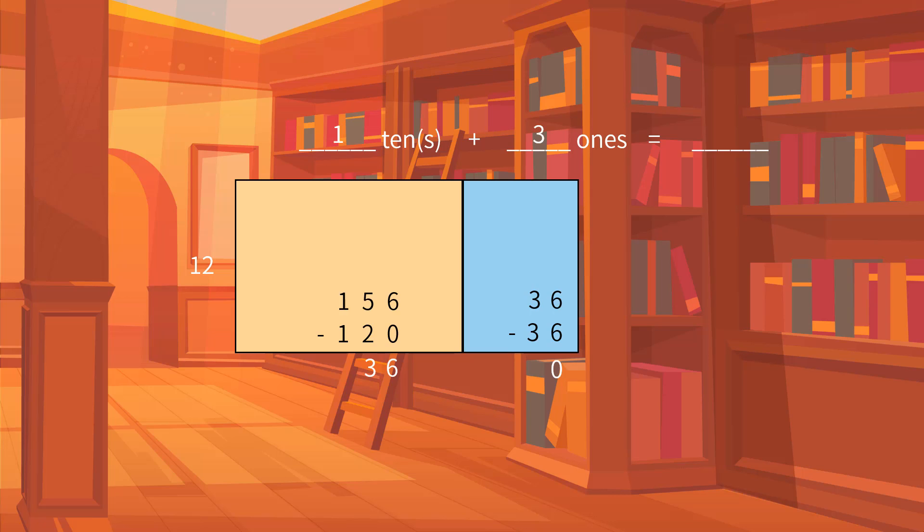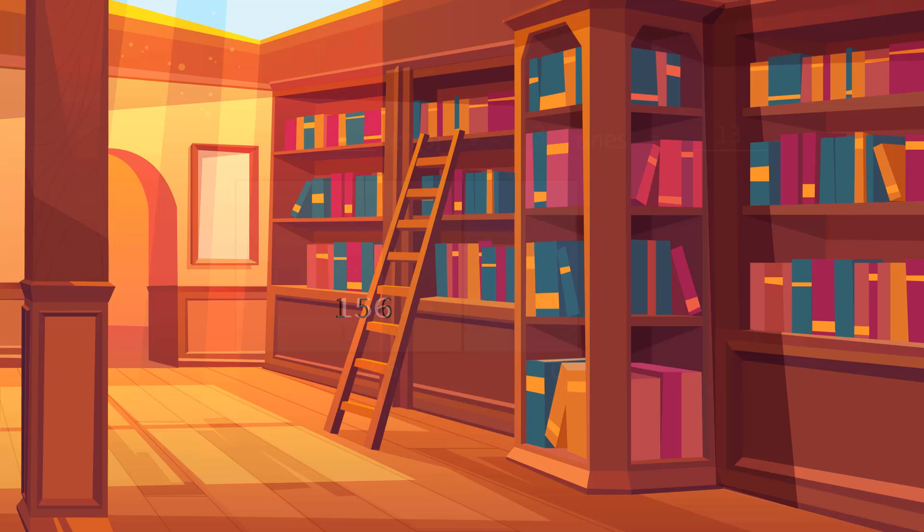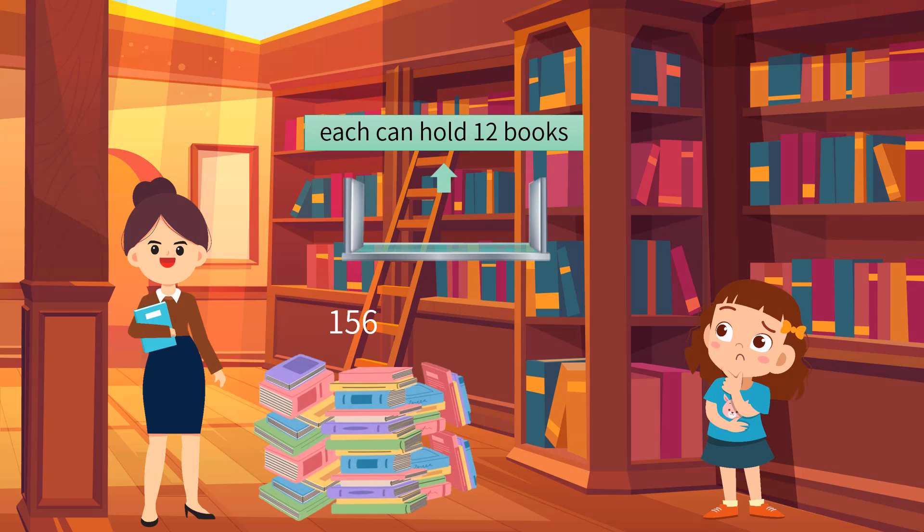By grouping the expansion form of the quotient, we know the quotient is 13. Miss Smith should buy 13 bookcases for the fiction novel section.